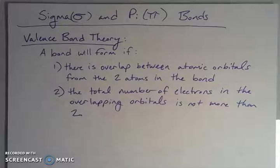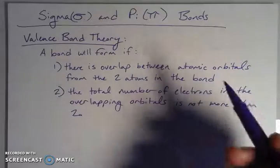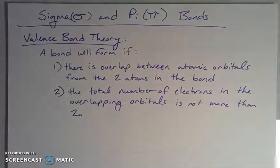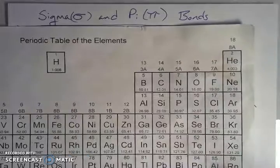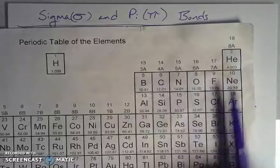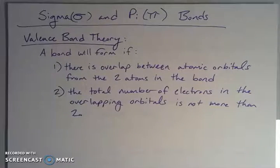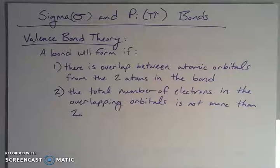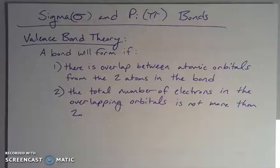Valence bond theory says that a bond between non-metals — just that corner of the periodic table with non-metals and other non-metals — involves the highest energy S and P electrons, which are found in particular orbitals depending on where the element is on the periodic table. These highest energy S and P electrons interact with each other and are shared between two atoms to form a covalent bond. A bond will form if there's an overlap between the atomic orbitals from the two atoms in the bond.